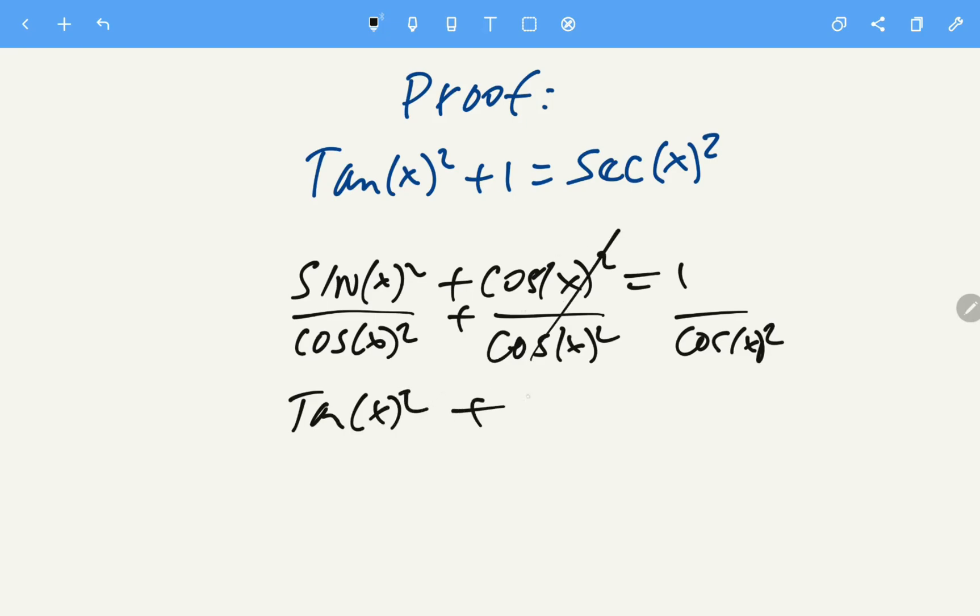The cosines cancel, so we have 1 equals 1 over cosine is secant. So we have sec(x)².